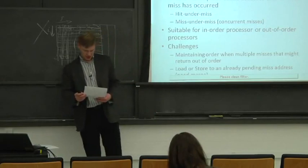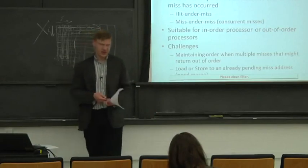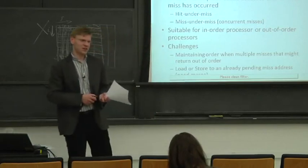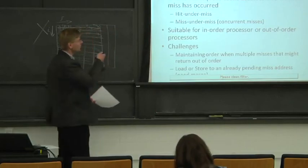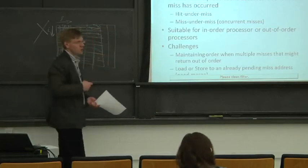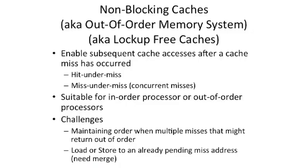Now we get to move on to the meat of today. We're going to talk about non-blocking caches, also known as out-of-order memory systems, also known as lockup-free caches. The first paper published on this called it a lockup-free cache, but lots of people call these things non-blocking caches today. From a memory perspective, it's an out-of-order memory system.